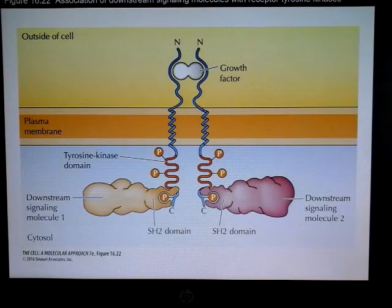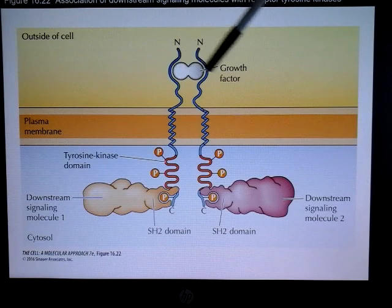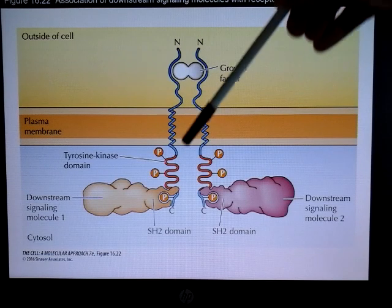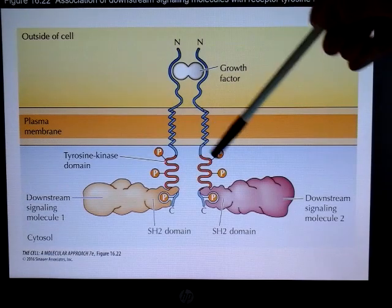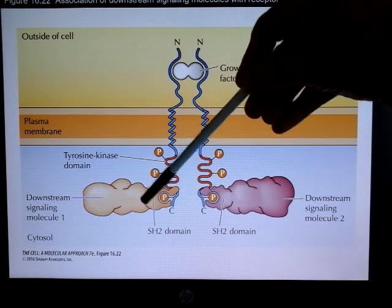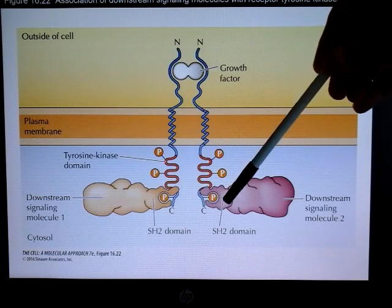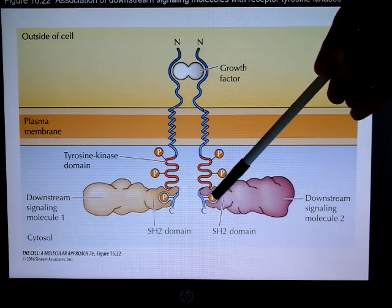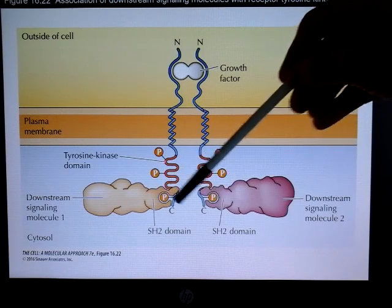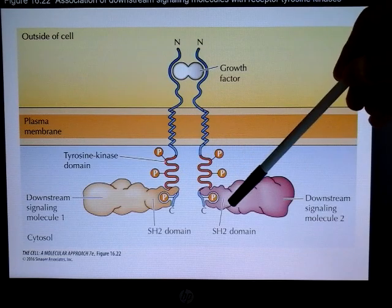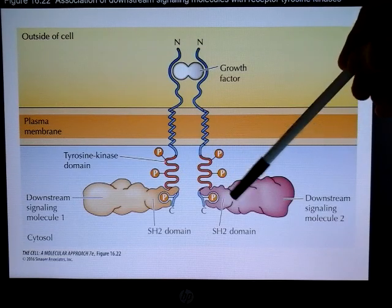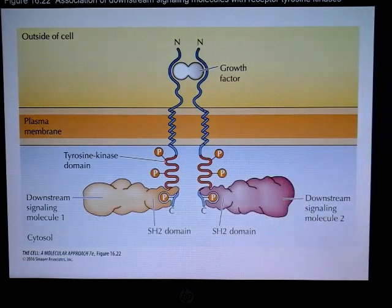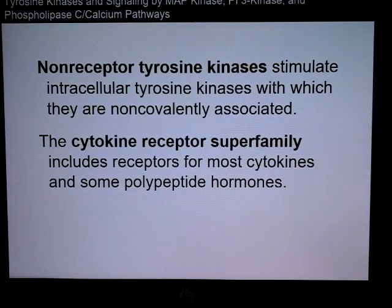Looking at this diagram, you have a growth factor — a ligand that binds on the outside — which sets off phosphorylations. Here are your SH2 domains. The phosphorylation on the cytosolic side then allows for binding of these domains, which can then lead to downstream phosphorylations.